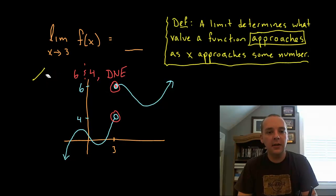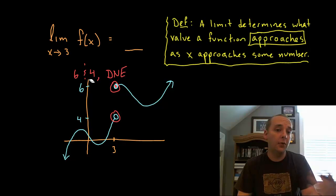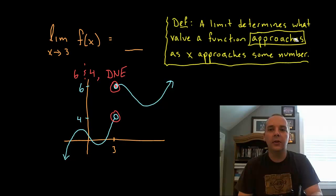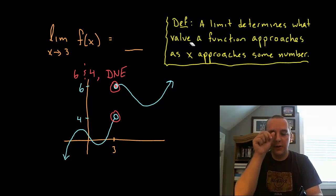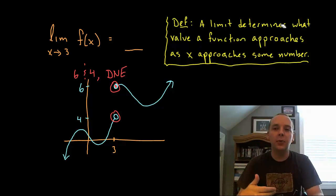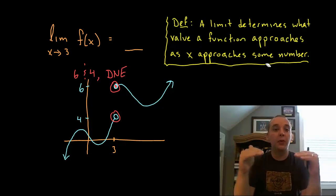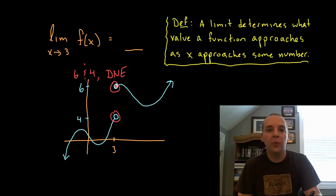Now probably the most understandable incorrect answer would be an answer of 6 and 4, because in some sense the function is approaching 4 from the left hand side, and approaching 6 from the right hand side. But if you take a closer look at the definition you see this is actually not possible either, because a limit determines what value, notice how that's singular, this one answer, not what values, but what value a function approaches as x approaches some number from both sides.